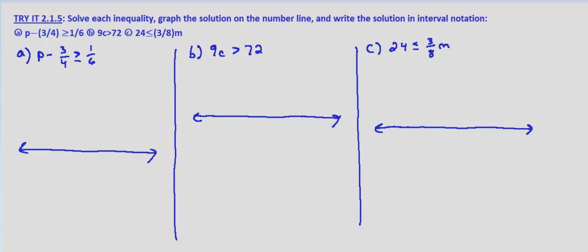So with p minus three-fourths is greater than or equal to one-sixth, I'll go ahead and in one step, let's put these over a common denominator. So 4 and 6, the least common multiple is 12. So 4 times 3 is 12, 3 times 3 is 9. We'll write this over to the side. This is 2 twelfths. We're adding 9 twelfths. So p is greater than or equal to 2 twelfths plus 9 twelfths is 11 twelfths.